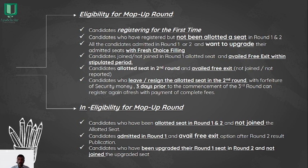Candidates who joined or did not join the Round 1 allotted seat and availed free exit within the stipulated period are also eligible. Candidates allotted a seat in Round 2 who availed free exit — that is, they have not reported to the allotted seat — are also eligible. Candidates who resign the allotted seat in the second round with forfeiture of security money, three days prior to the commencement of the third round, can register again afresh with payment of complete fees, since the security fee was forfeited. These are the candidates who get eligibility for the mop-up round.